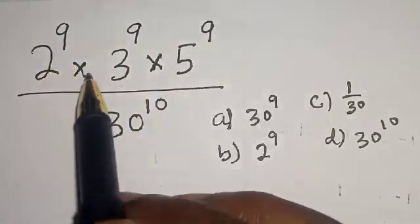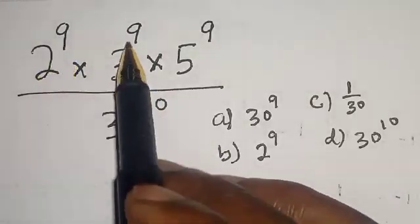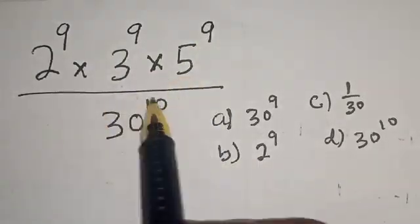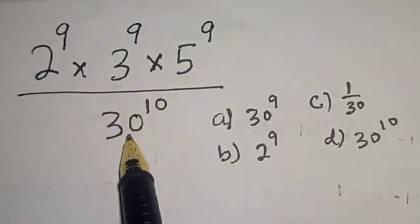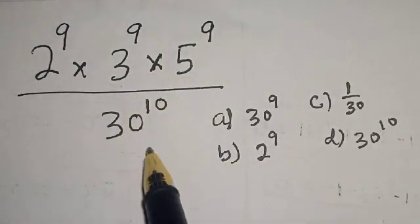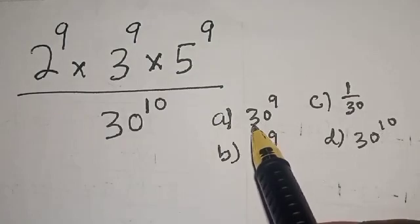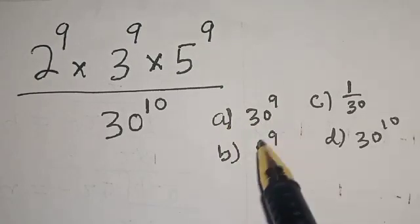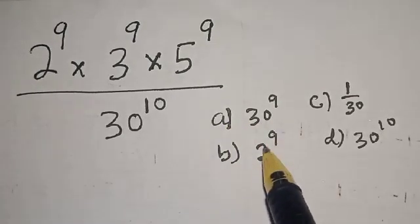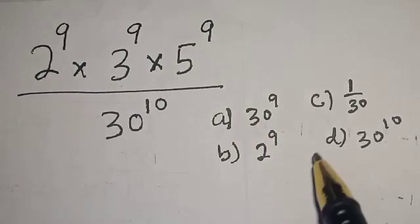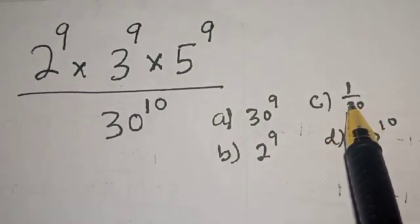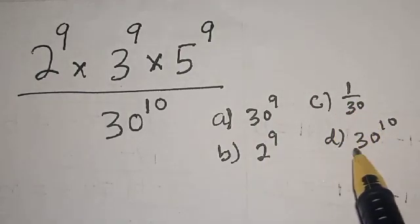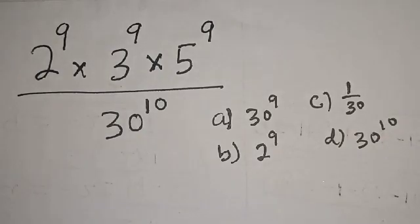2 raised to power 9 multiplied by 3 raised to power 9 multiplied by 5 raised to power 9, divided by 30 raised to power 10. And here are the options given: option A is 30 raised to power 9, B is 2 raised to power 9, C is 1 divided by 30, and D is 30 raised to power 10.